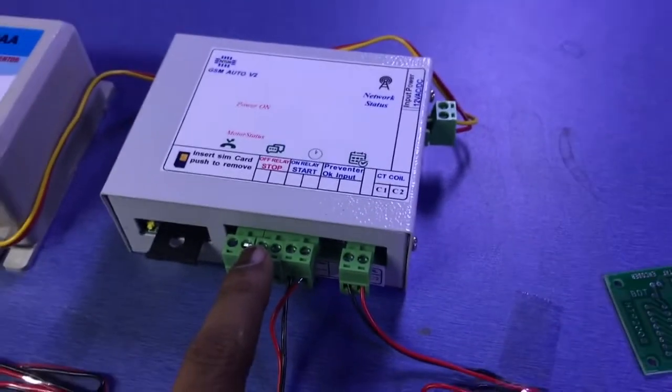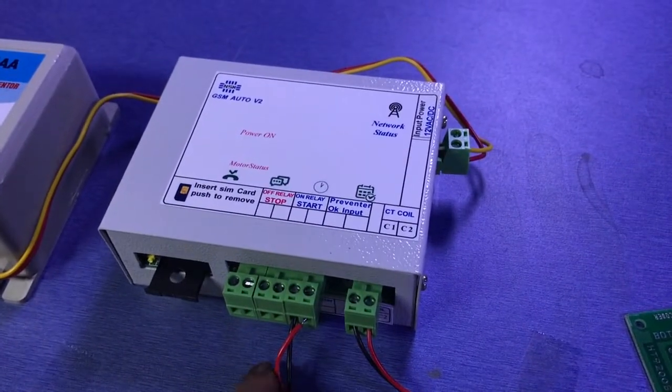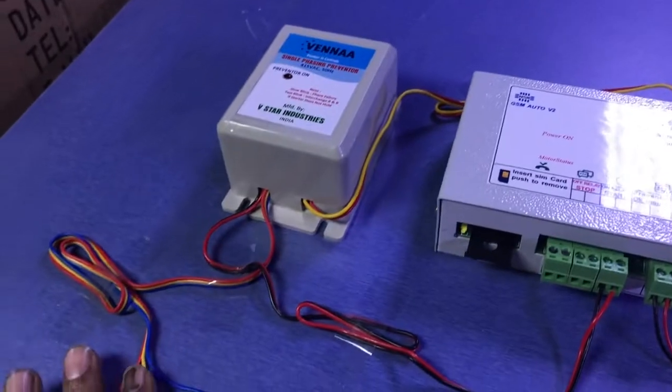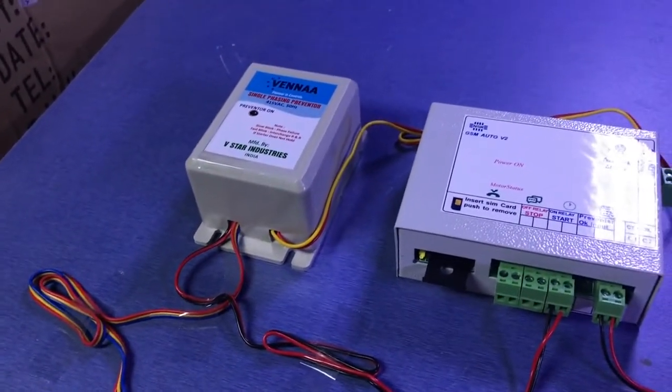This is the preventer. This is the three phase sequence. There is an imbalance in three phase sequence.